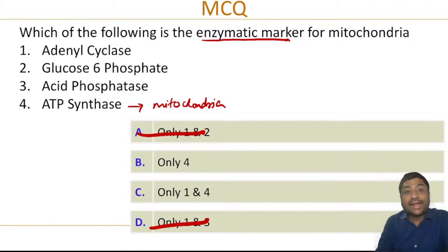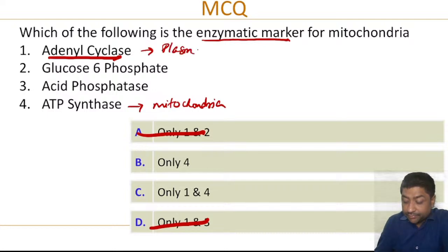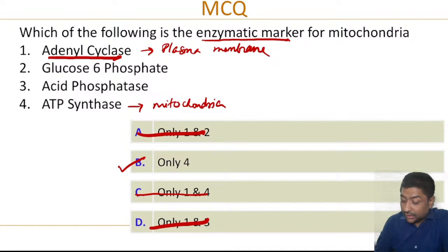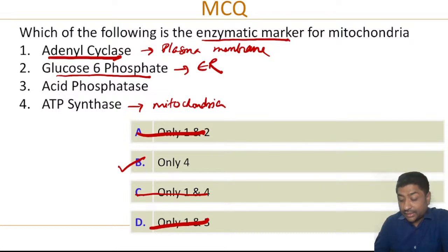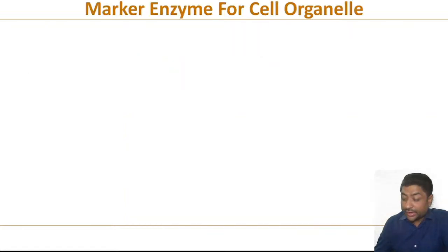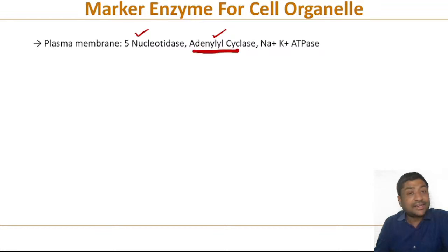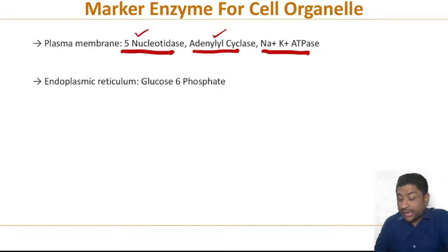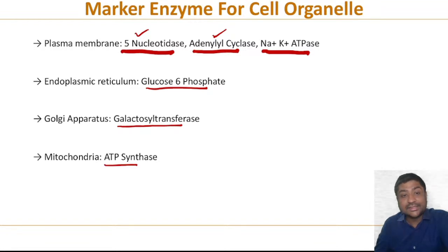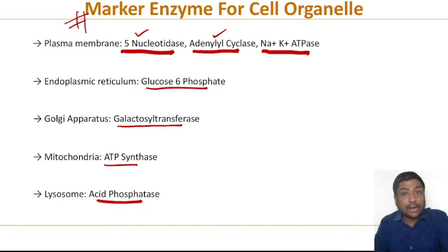Adenyl cyclase is a plasma membrane marker, so that is gone. The correct answer is ATP synthase. Glucose-6-phosphatase is in the endoplasmic reticulum. Acid phosphatase is in the lysosome. So remember all organelles along with their markers: plasma membrane — adenyl cyclase, sodium-potassium ATPase, 5'-nucleotidase; endoplasmic reticulum — glucose-6-phosphatase; Golgi apparatus — galactosyl transferase; mitochondria — ATP synthase; lysosome — acid phosphatase. This is a very high-yield point that keeps coming in examinations.